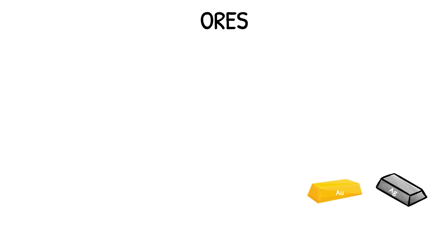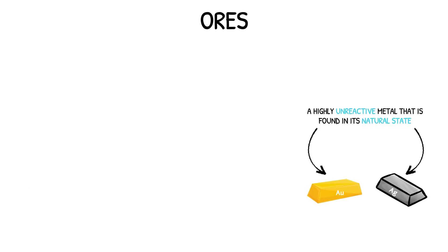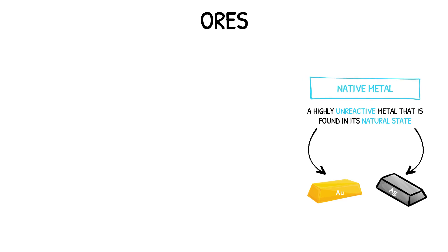Very unreactive metals such as gold and silver are found naturally in their native state. These metals are referred to as native metals. In contrast, most highly reactive metals are not found in their natural state — they have reacted with other elements to form compounds in rocks.